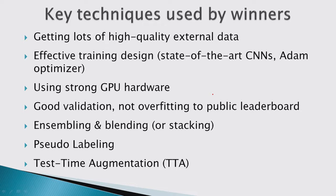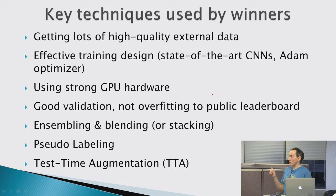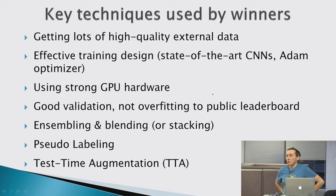Someone asked about the difference in performance between teams using only the sample training data versus those using external data. None of the top teams used just the provided training set — all of them downloaded more data. It also depends on GPU setup: if you only have one GPU, even if you download a lot more data, you might not have enough time to train your network on it.